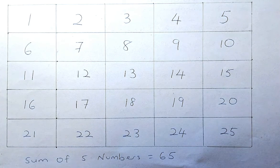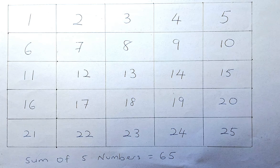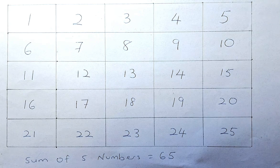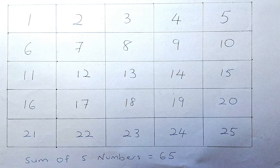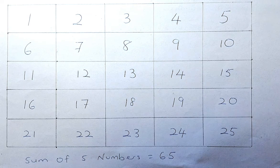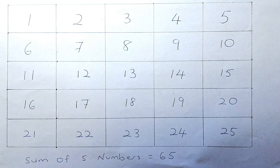In this trick, we are going to predict the sum of the 5 numbers you are going to pick from this grid of 1 to 25. The 5 numbers you pick is going to add up to the total of 65. So how are we going to do that?